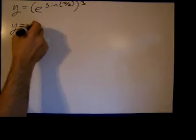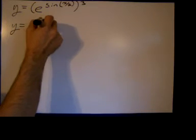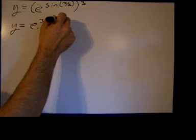So I'm just going to rewrite this as e to the 3 times the sine of x over 2, which is just e to the 3 sine of x over 2.